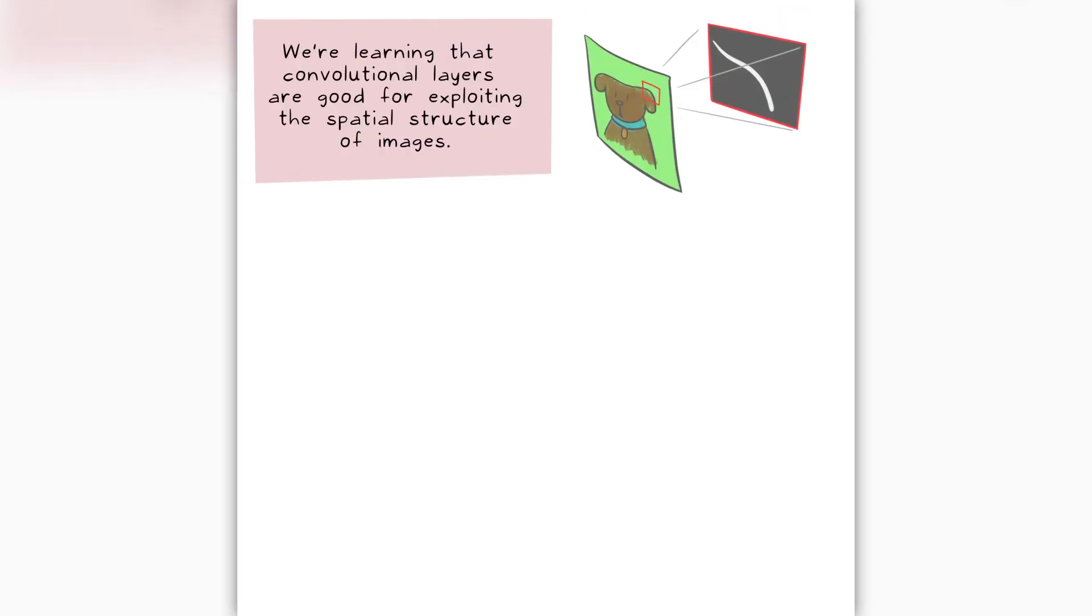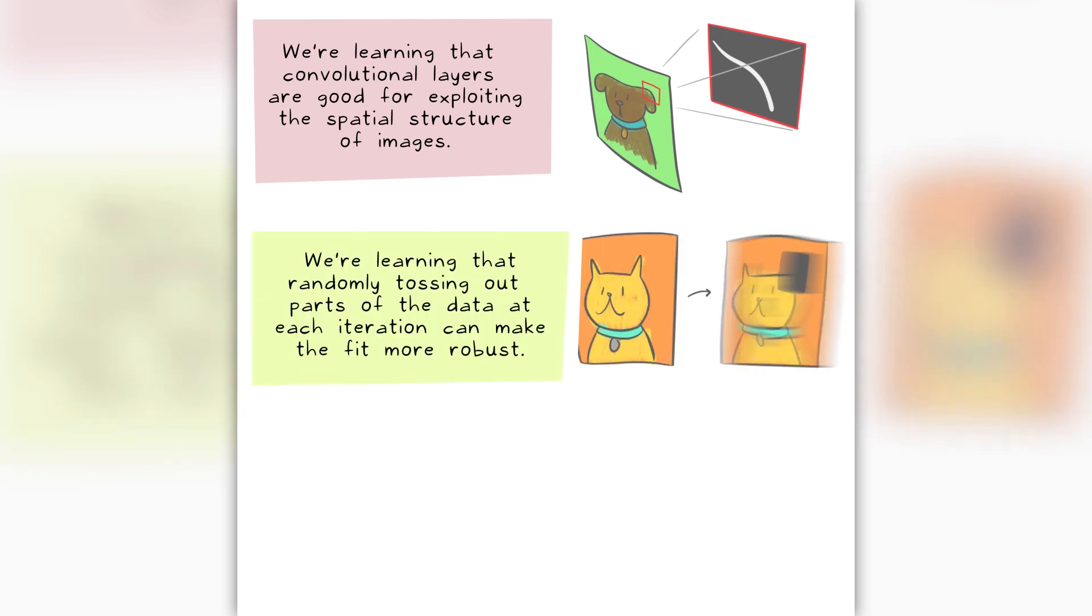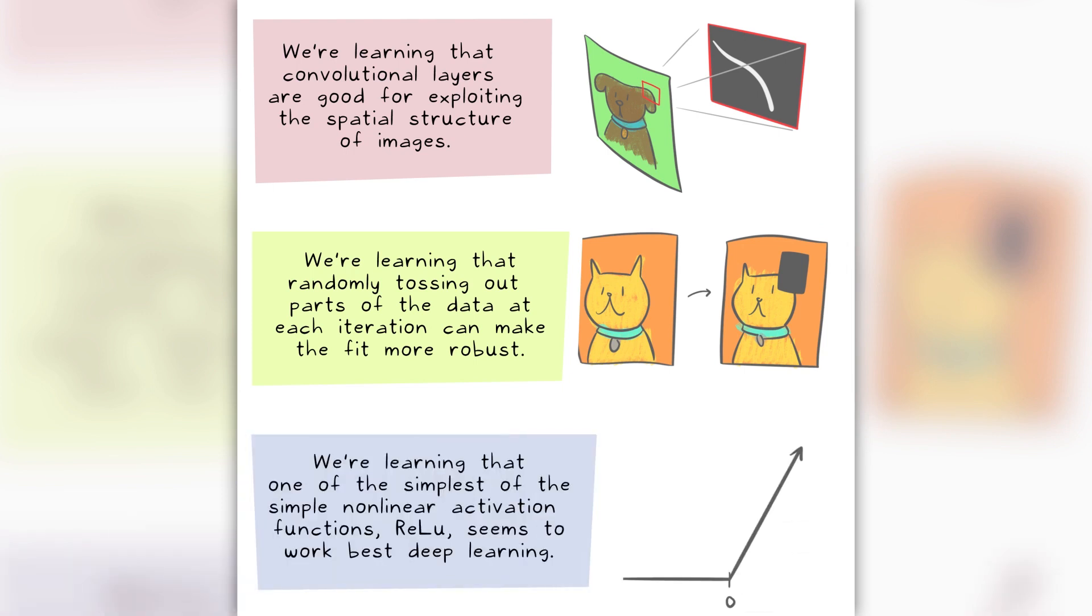We're learning that convolutional layers are good for exploiting the spatial structure of images. We're learning that randomly tossing out parts of the data at each iteration can make the fit more robust. We're learning that one of the simplest of the simple nonlinear activation functions, RELU, seems to work best in deep learning.